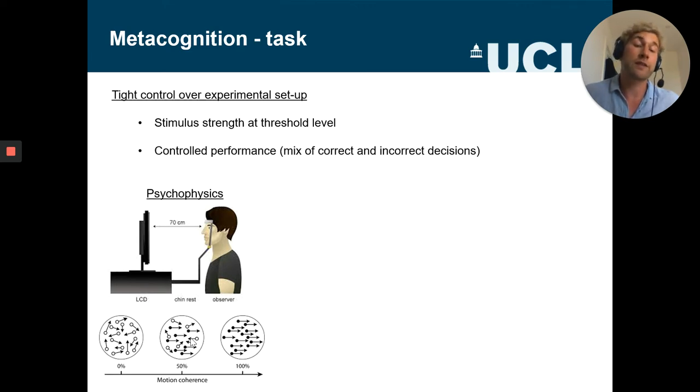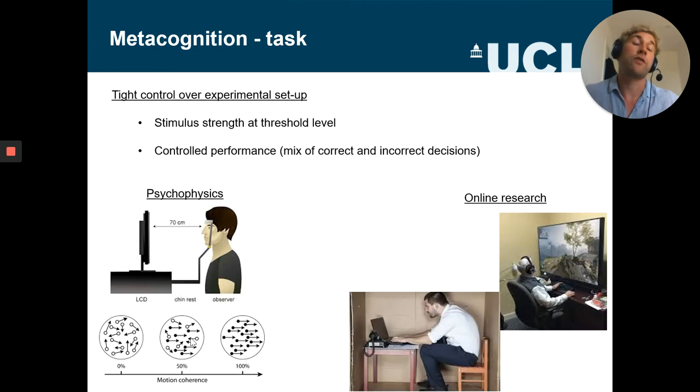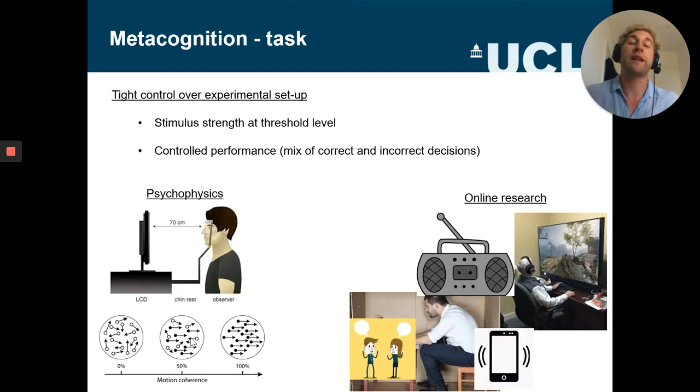So psychophysics is on one side of the spectrum of experimental control, and often it's assumed that online research is just on the opposite side, as people might have very different setups. For instance, people might have different screen sizes and that arguably could influence this kind of perceptual task. But then also it's always assumed that there are all these distracting influences at home preventing people to really pay attention to the task. So let me just tell you what we came up with to solve these issues.